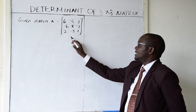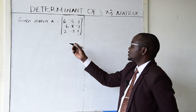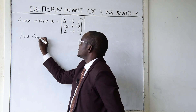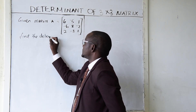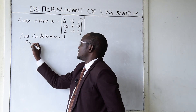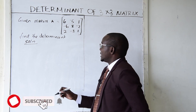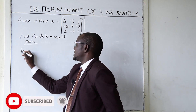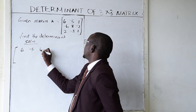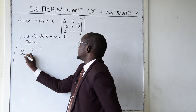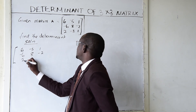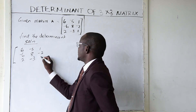If you are also given a matrix and told to find the determinant, here is how you proceed. We rewrite the matrix: 6, −5, 1 / −6, 8, −2 / 2, −3, 1.